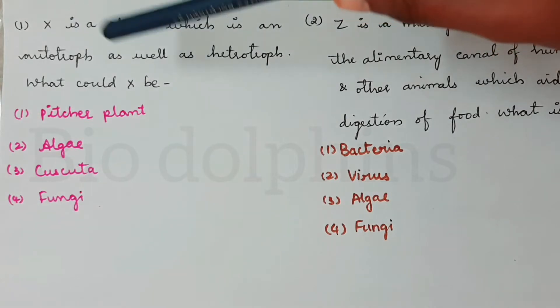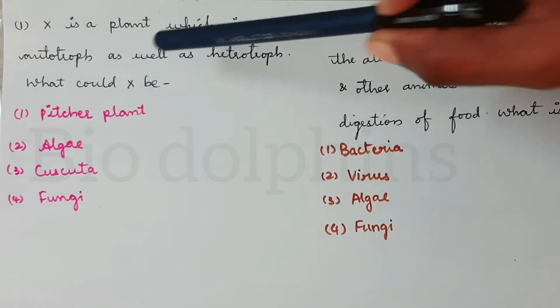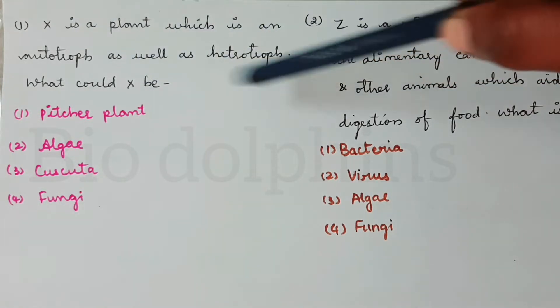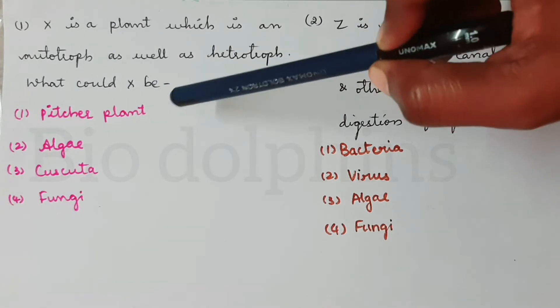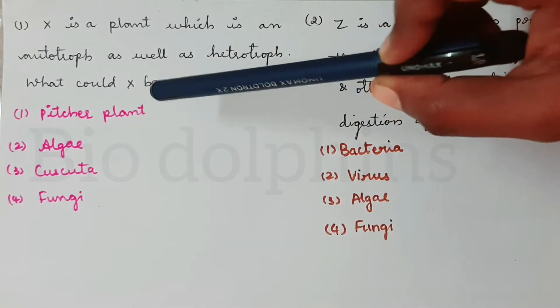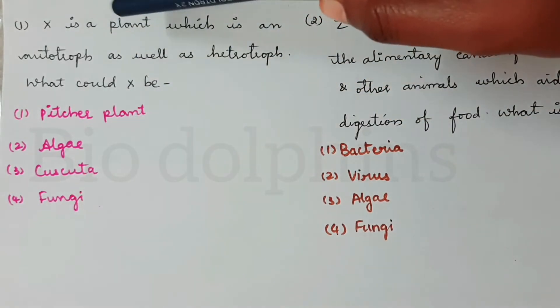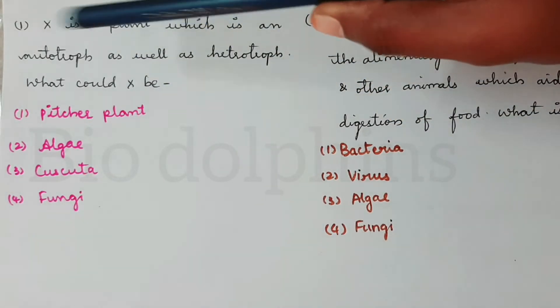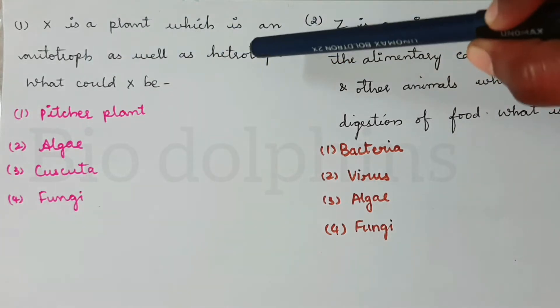First question is: X is a plant which is an autotroph as well as heterotroph. What could X be? So X is a plant, autotroph, and heterotroph.